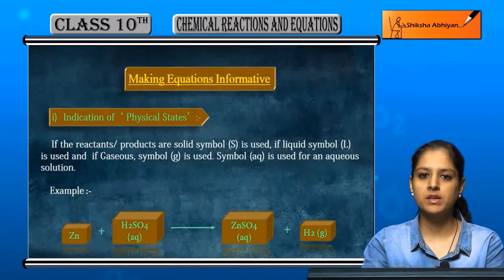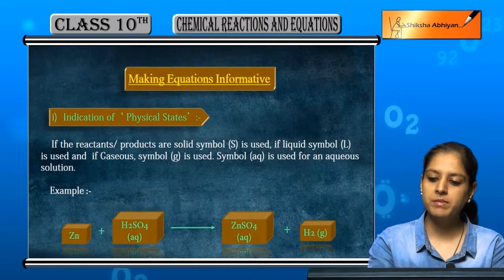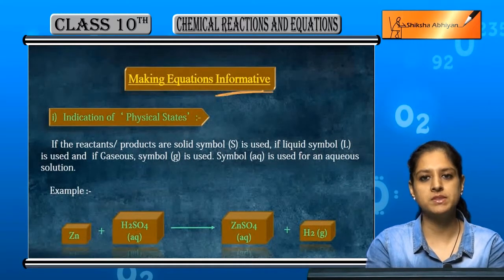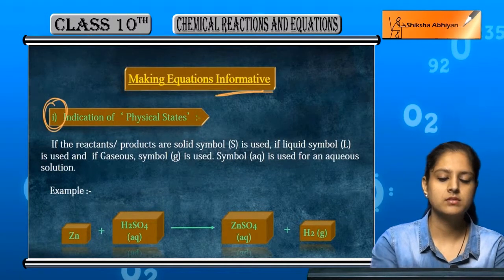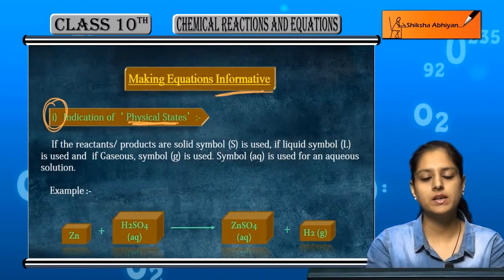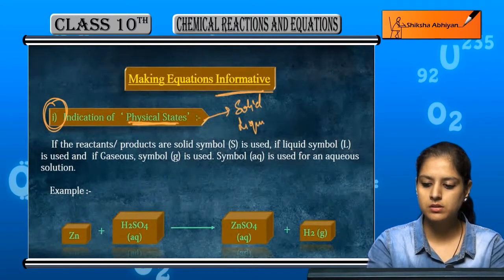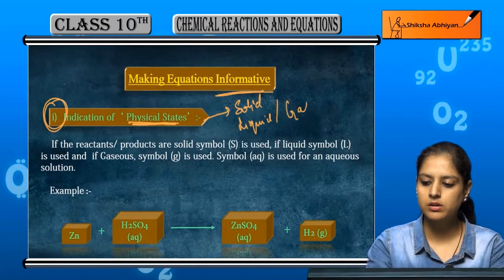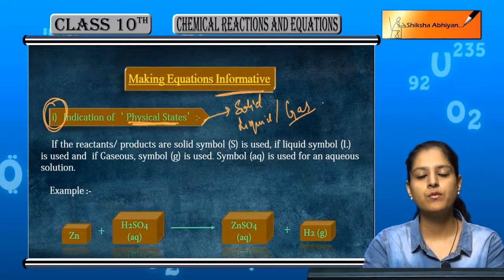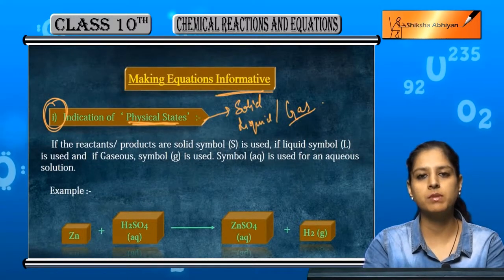Now we will see how we can make chemical equations informative. Informative means that if we look at equations, we will get to know many things. So what can we do first? We can indicate physical states. If we mention it, it will be the first step to make it informative.